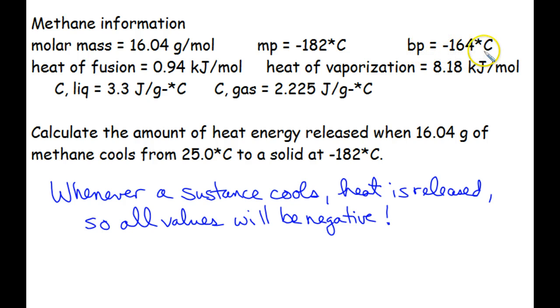The boiling point of methane is negative 164 degrees Celsius. So obviously we are well above the boiling point, so we must be dealing with a gas. So we are going to take the gas from 25 degrees Celsius down to the boiling point, or what could also be called the condensation point, to negative 164 degrees Celsius. So that's a long way.